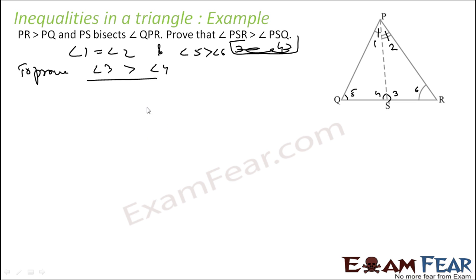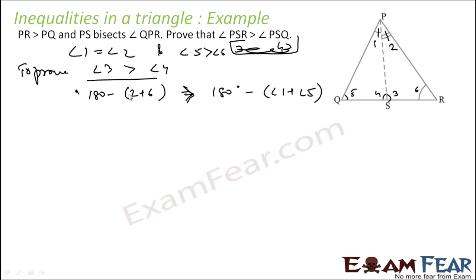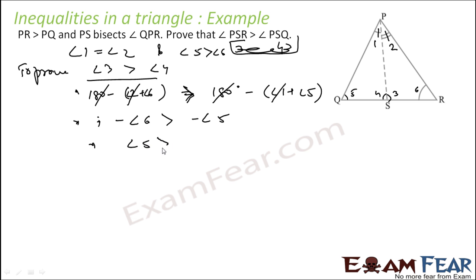So let's see what angle 3 and angle 4 are. Angle 3 is nothing but 180 degrees minus (angle 2 plus angle 6). And angle 4 is 180 degrees minus (angle 1 plus angle 5). Since angle 1 is equal to angle 2, we can cancel this. So we have to prove that minus angle 6 is greater than minus angle 5, or flipping the sign, angle 5 is greater than angle 6. And angle 5 is greater than angle 6 — that is given.